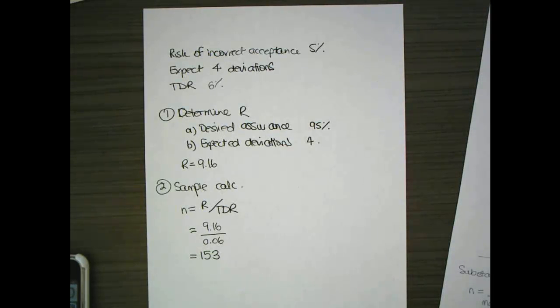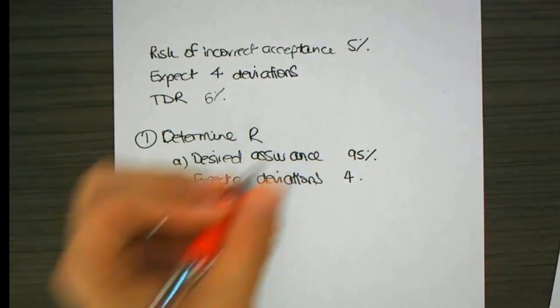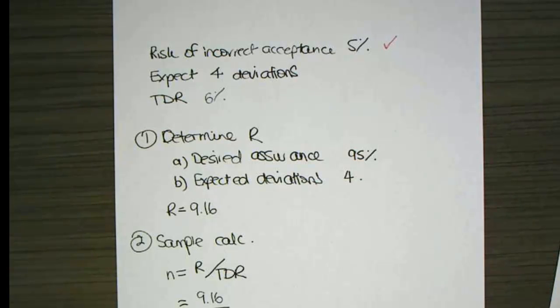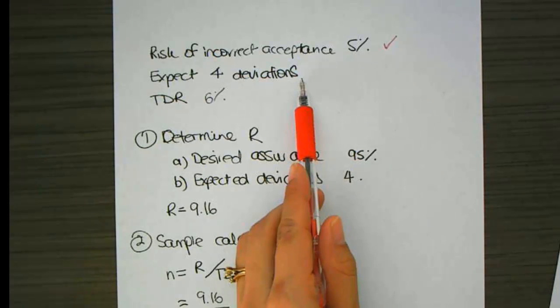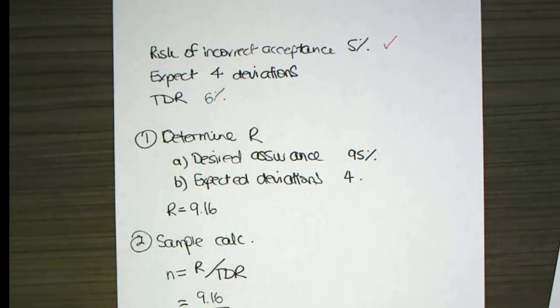Alright, let's do another example, but this time we're going to use substantive testing, but I'm going to use some of the same information. So the thing that I'm going to use that's the same is the risk of incorrect acceptance. 5%. So that means I want to be 95% sure. But because of substantive testing, I'm not interested in deviation.